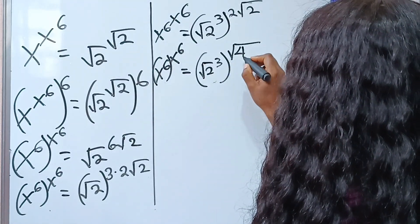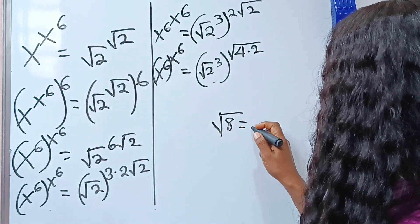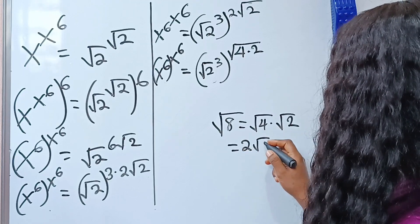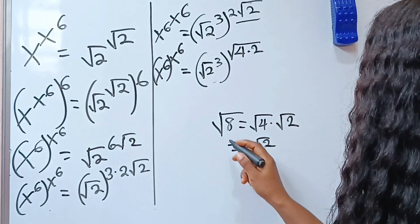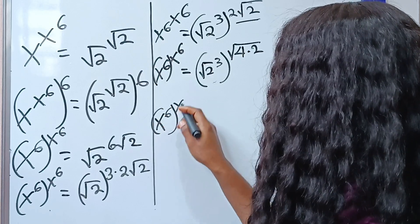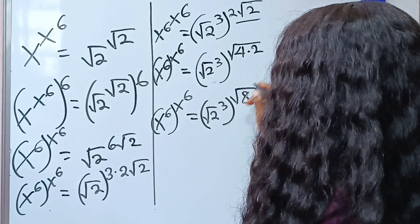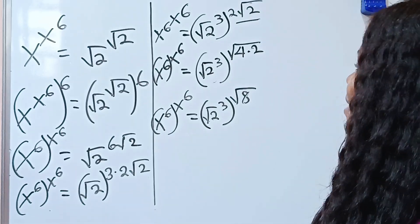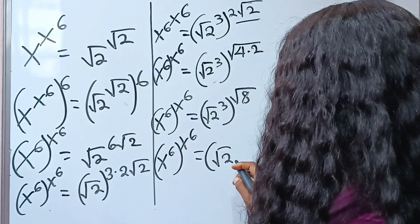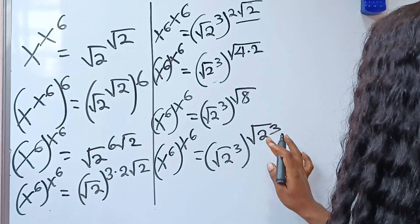Squaring 2 gives me 4, multiplied by the 2 already inside, giving us 8. So distributing: square root of 4 times square root of 2 — square root of 4 gives me 2, and we still have root 2. So the expression equals square root of 2 raised to the power of 3, now raised to the power of square root of 8. And square root of 8 is also the same as 2 to the power of 3. So we now have the same structure on both sides.